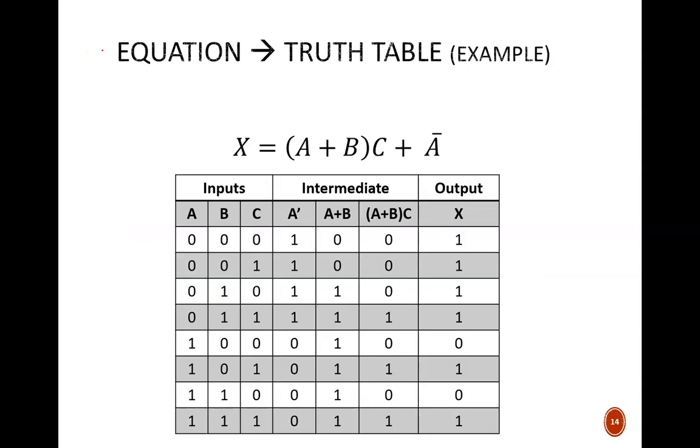Let's look at this example, featuring an equation that has multiple steps. We notice the domain has three variables, A, B, and C, so we list those under the inputs columns. The binary codes underneath follow a straight count.